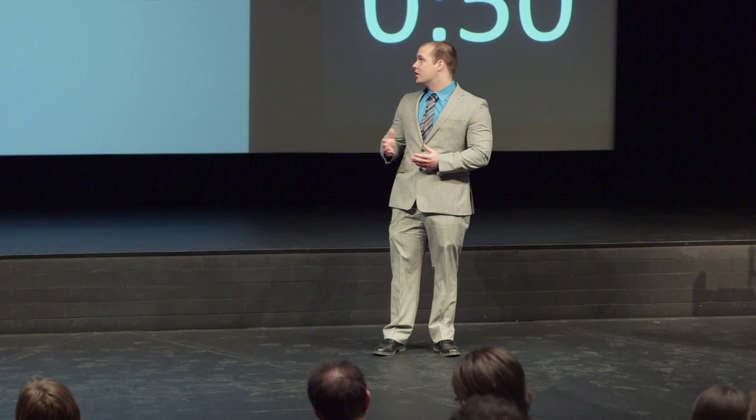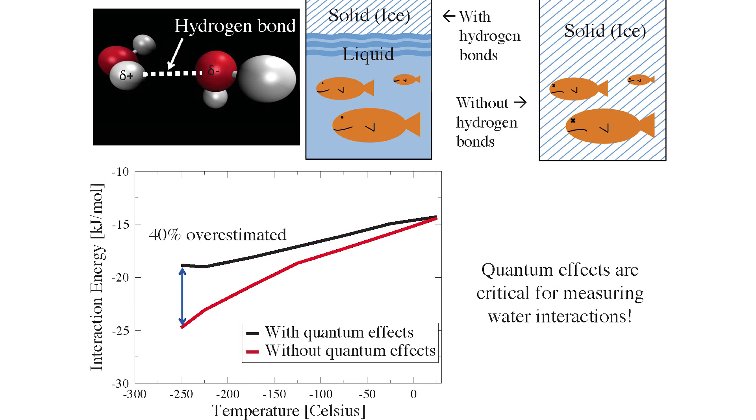I have shown some of my results here, showing interaction energy — the energy between the two water molecules — as a function of temperature. I have plotted two curves, one with and one without quantum effects. Clearly, in the high temperature limit, you can see that not including quantum effects isn't that big of a deal. However, as the temperature drops and the quantum effects become more important, you can see that at about minus 250 degrees Celsius, we overestimate the strength of the interaction by about 40% by not including these quantum effects.